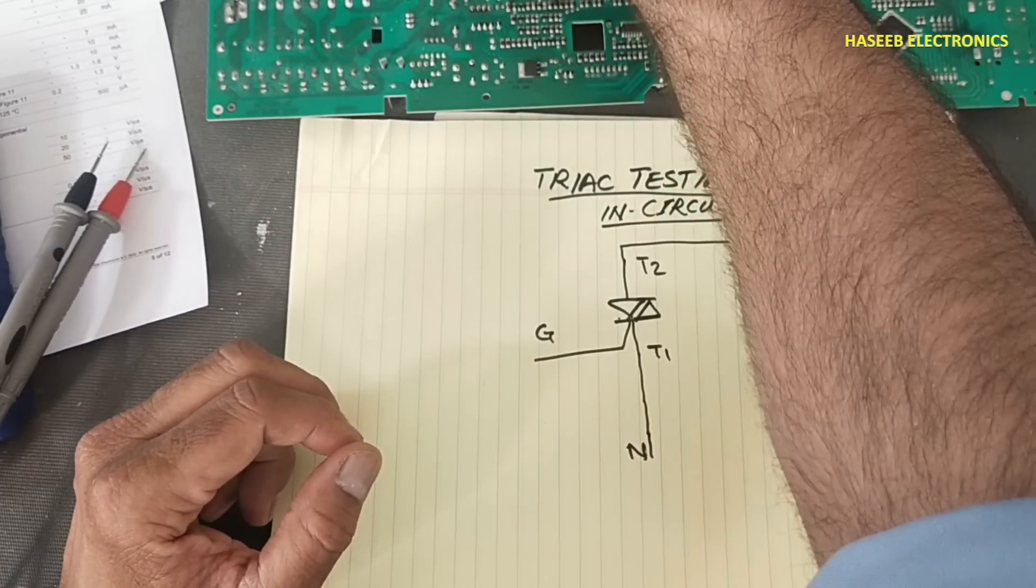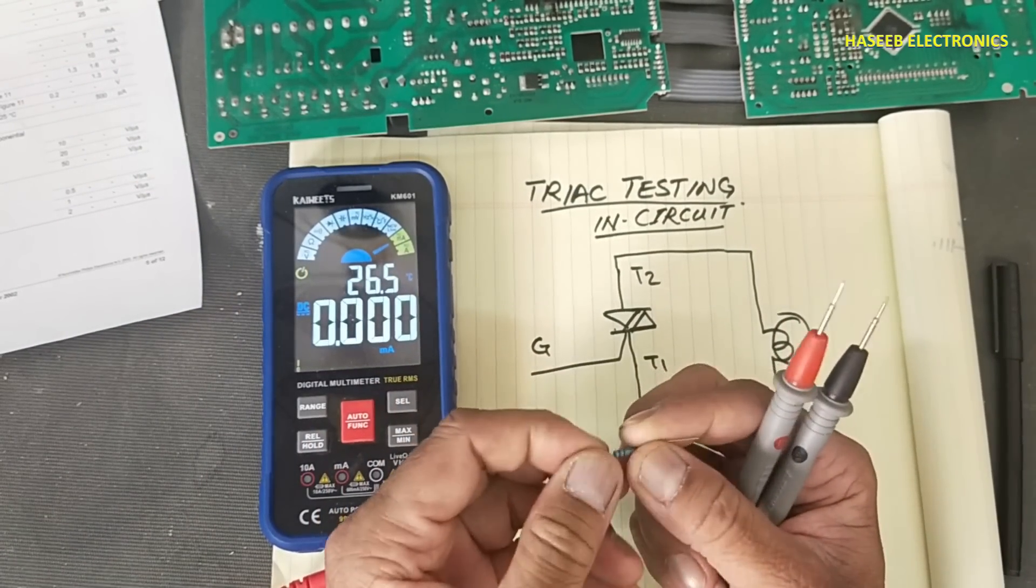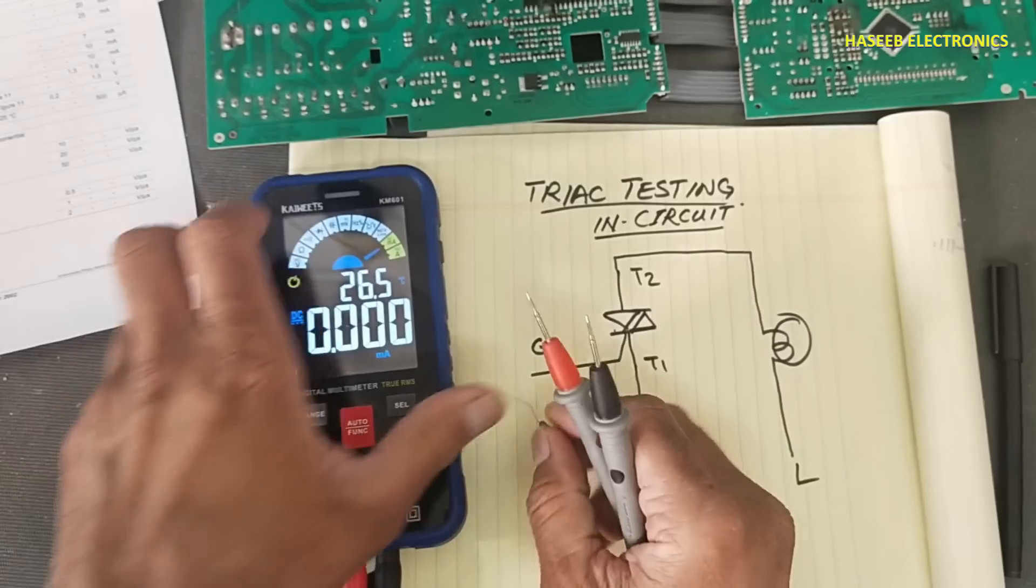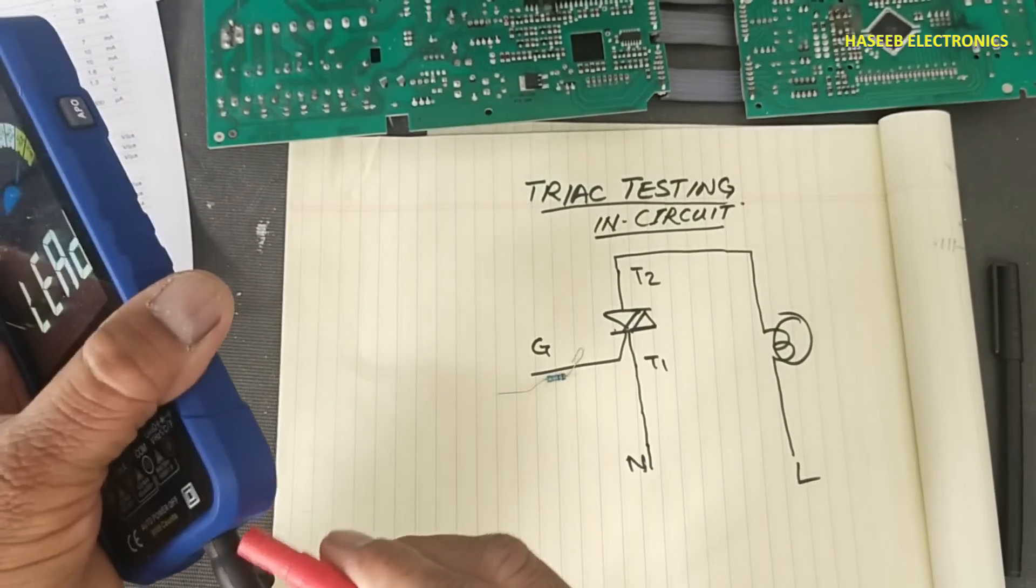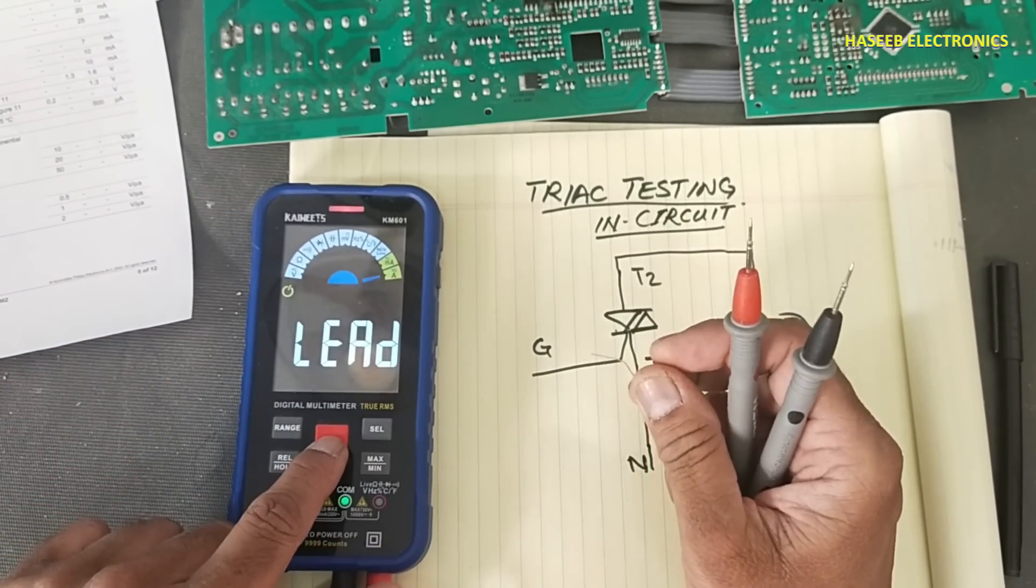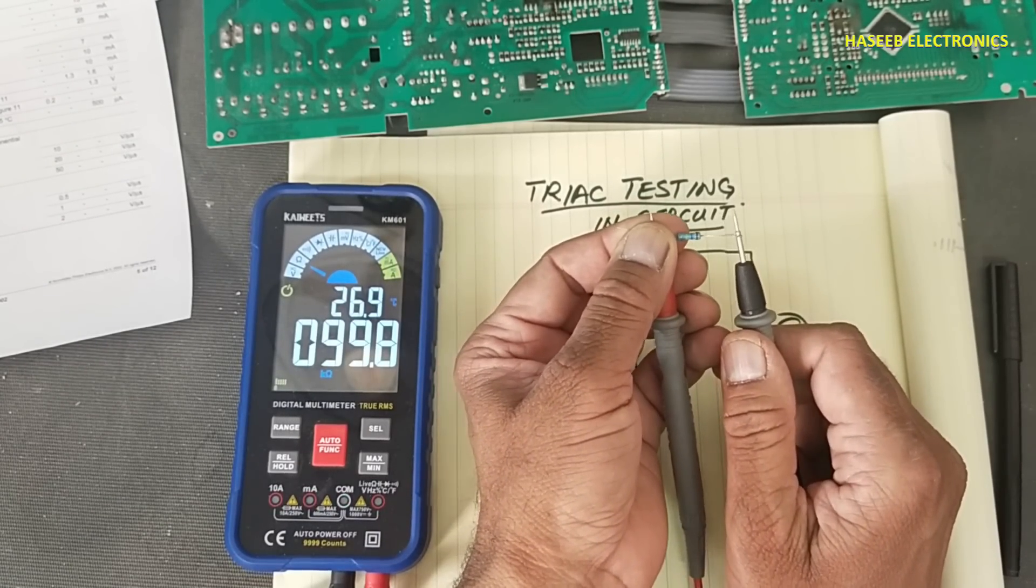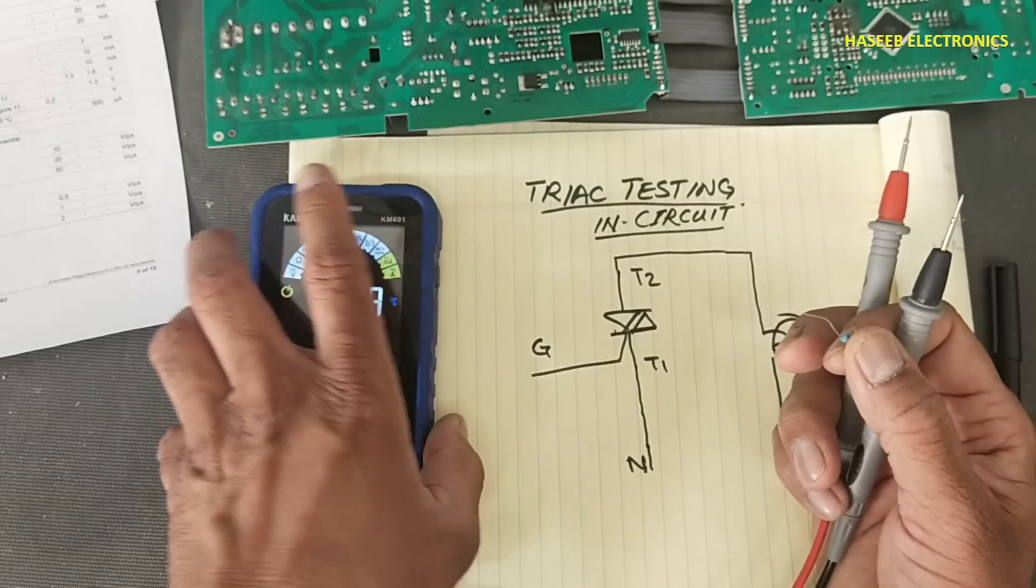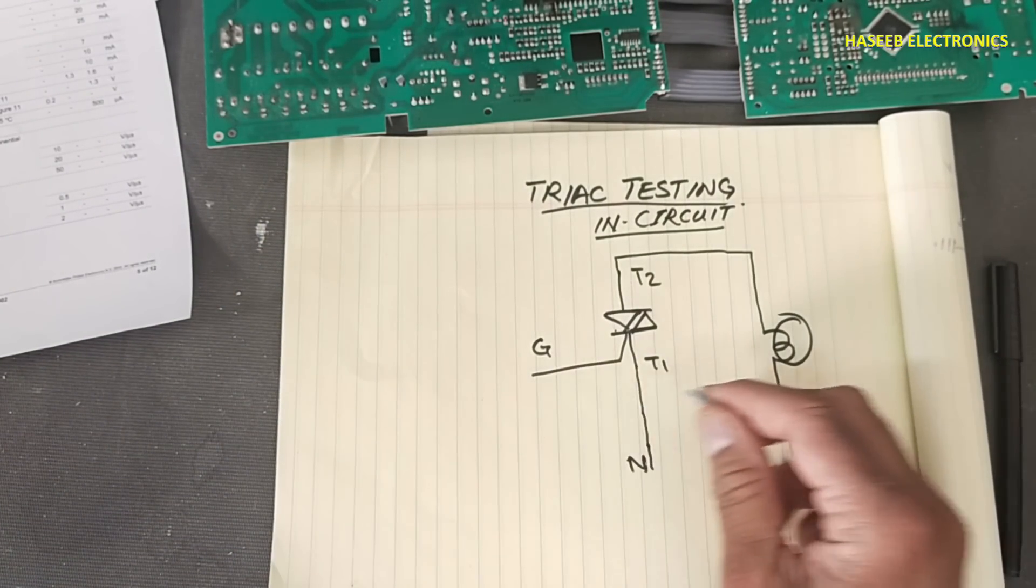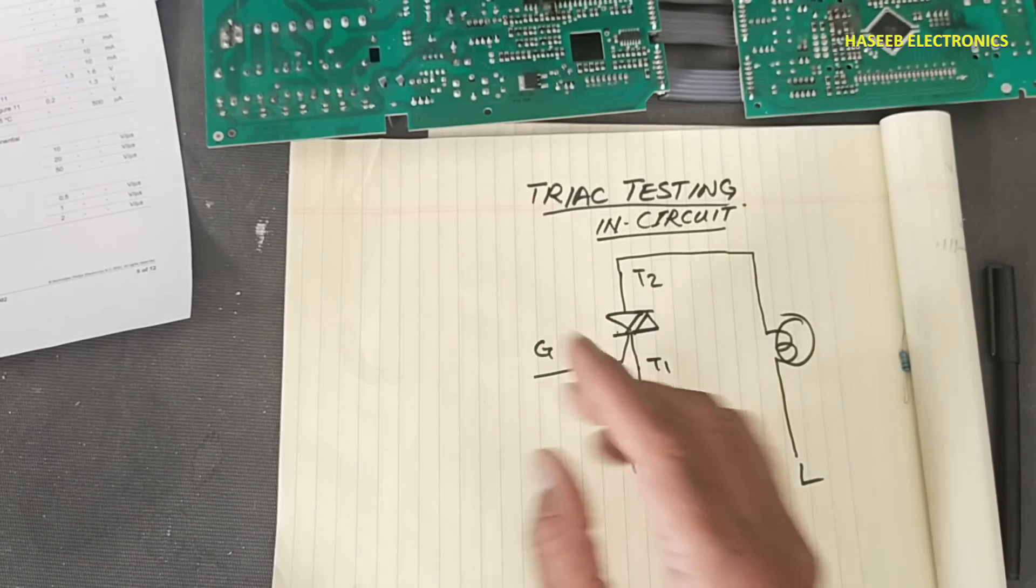We can use 100 kilohm resistance - that's sufficient. But we will not use a multimeter in ampere or milliampere mode. Here is a 100 kilohm resistance. If you don't have good practical experience in power electronics, never do this experiment because it has live voltage.